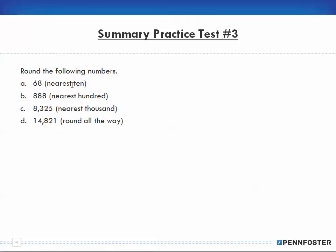Round the following numbers. A: round 68 to the nearest ten. The nearest ten being the 6, I look at the ones digit — 8 is greater than 5 so I round up. My answer is 70. Now B: round 888 to the nearest hundred. I start with the 8 in the hundreds place, and my next digit is an 8 which is greater than 5, so I round up and end up with 900.